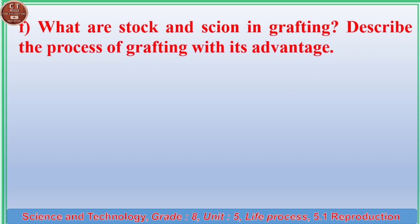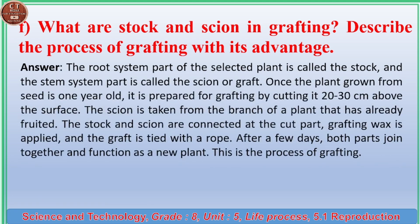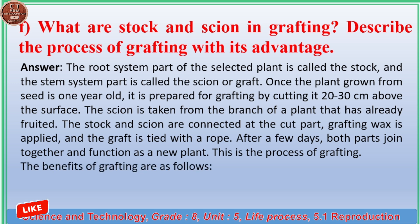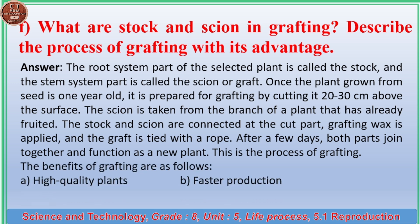(f) What are stock and scion in grafting? Describe the process of grafting with its advantages. Answer: The root system part of the selected plant is called the stock, and the stem system part is called the scion or graft. Once the plant grown from seed is one year old, it is cut 20 to 30 centimeters above the surface. The scion is taken from a branch of a plant that has already fruited. The stock and scion are connected at the cut part, grafting wax is applied, and the graft is tied with a rope. After a few days both parts join and function as a new plant.